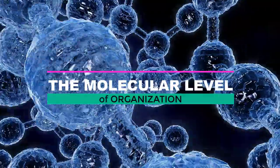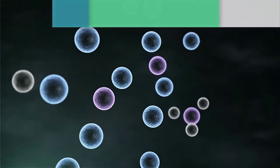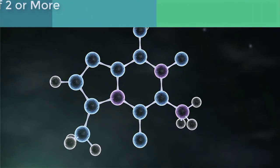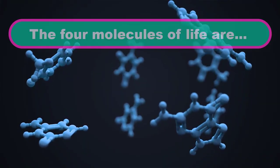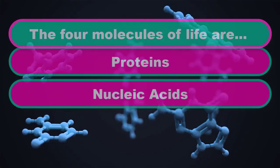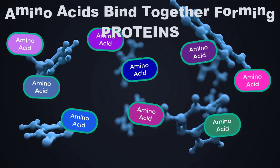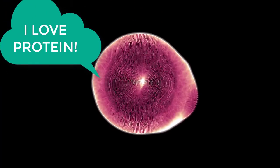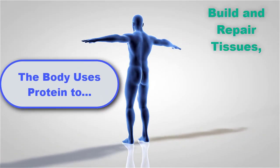At the molecular level of our anatomical organization, atoms come together forming molecules. A molecule is composed of two or more atoms bound together. Smaller molecules can combine with one another to form the large macromolecules needed for life to exist on our planet. These are proteins, nucleic acids, lipids, and carbohydrates. Proteins are formed by assembling many units of amino acids together and provide the majority of the functions of the cell. The body uses protein to build and repair tissues.